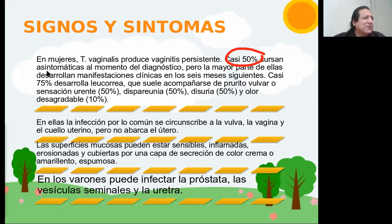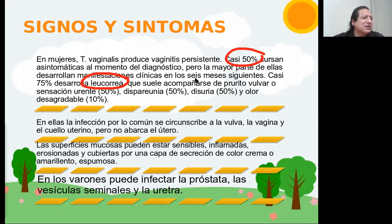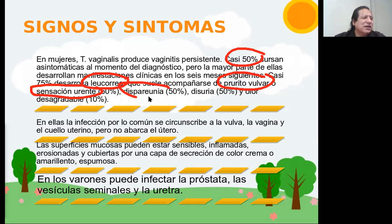Ahora, entre las que tienen síntomas, la mayoría va a presentar leucorrea — esa secreción transvaginal que en este caso puede variar de un color blanco a un color amarillento. No es característico que sea blanco o amarillento; más bien, generalmente suele ser más espumoso. Se ha venido acompañada de prurito — picazón —, sensación de ardor, dolor, esa sensación incómoda dentro de la vagina. Puede haber dolor en relaciones sexuales, dolor al orinar, y un olor desagradable, fétido.